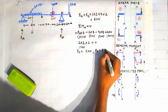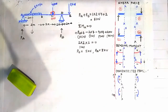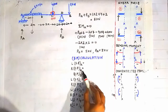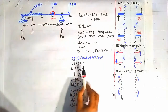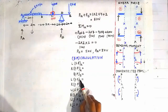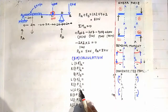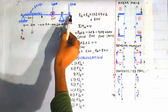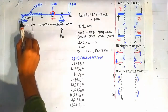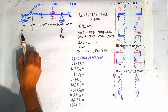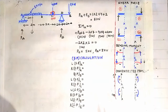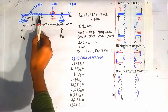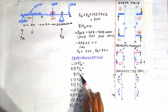Now we will calculate the shear force at various points A, B, C, D, and E. We must calculate on the left side and the right side of points A, C, and D because point loads act there — shear force changes suddenly when moving from the left to the right of these points. At point B there is no point load, so we directly calculate the shear force there.